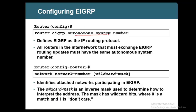We need to have an autonomous system number, and you don't need to buy it from anyone — you can use any number. If I use 10, this router belongs to autonomous system 10. If I want the neighbor router to share routes with me, I need to give it the same number 10. The command is 'router EIGRP' followed by the number, which puts the router into autonomous system 10. All routers that must exchange EIGRP routing updates must have the same autonomous system number.